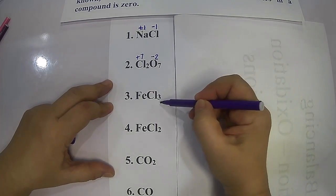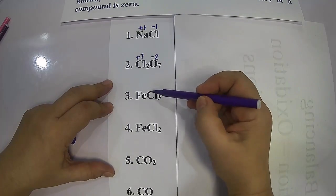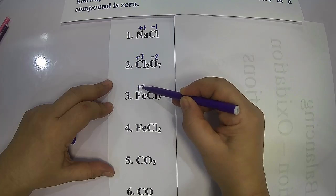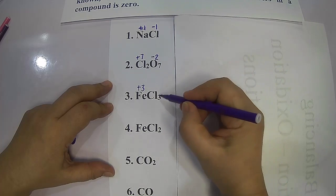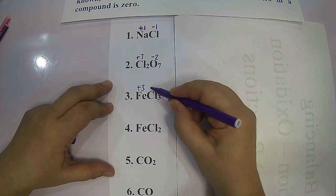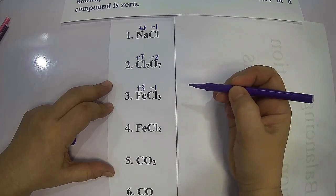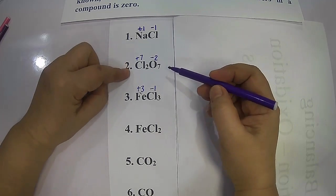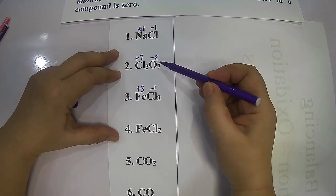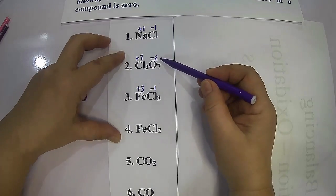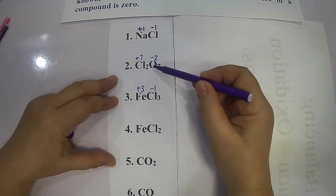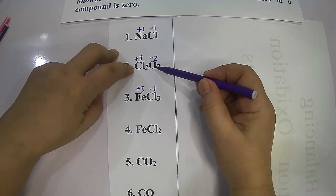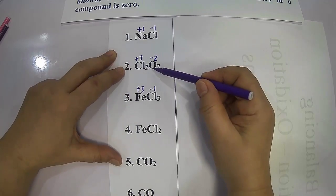For ferric chloride (FeCl₃), the subscript of chloride corresponds to the oxidation state of iron, positive three, and chloride in family 7A is negative one. In another example, iron has positive seven because it is joined with a more electronegative element, oxygen.